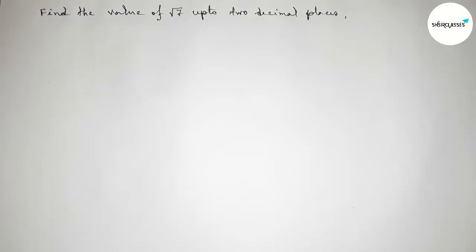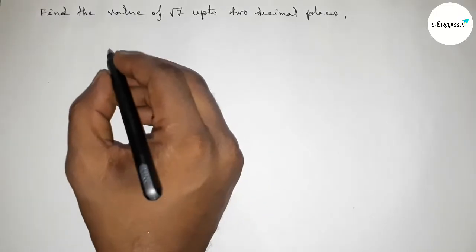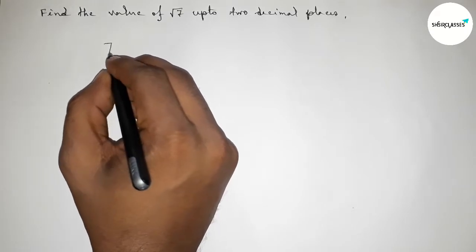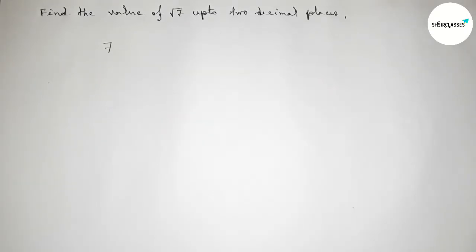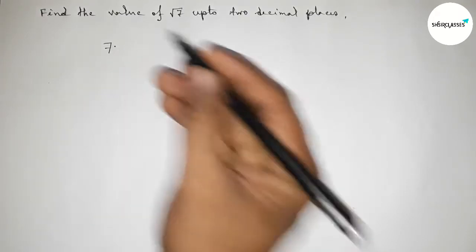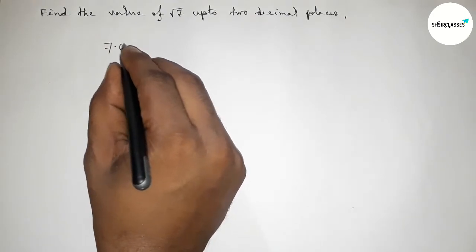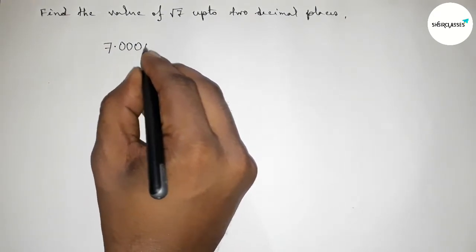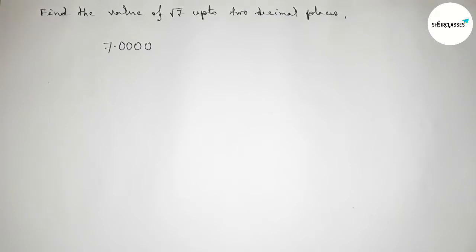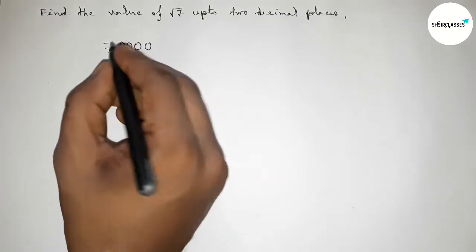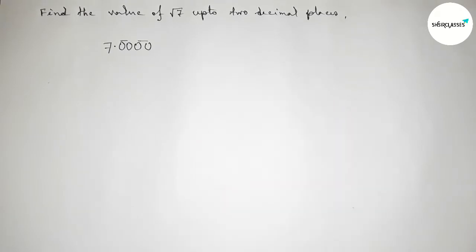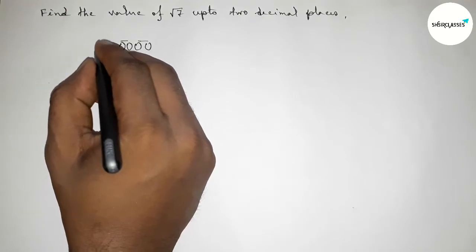First of all, write here the number 7, and now taking a point beside 7. For up to two decimal places we have to write four zeros, making them as pairs — two zeros as a pair — so here we got two pairs of zeros. Now drawing the division line on both sides.